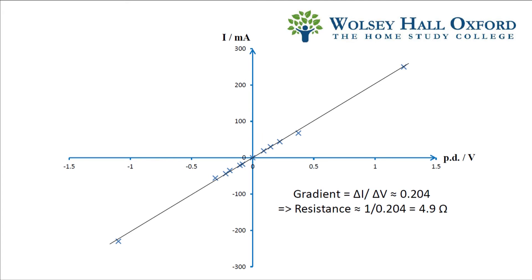If we find the reciprocal of the gradient, in other words, if we find the gradient and then do 1 divided by that answer, we get the resistance. And the resistance value you get is 4.9 ohms.